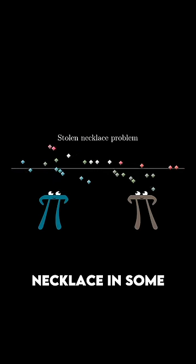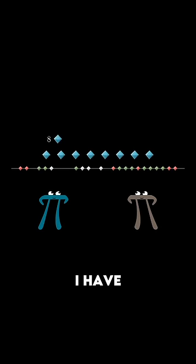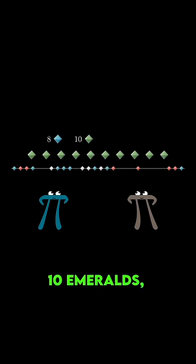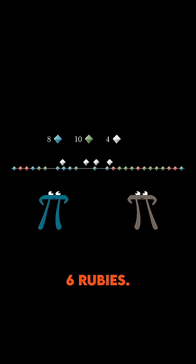They're all arranged on the necklace in some random order. Right here, I have 8 sapphires, 10 emeralds, 4 diamonds, and 6 rubies.